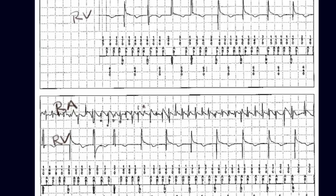In this case, something that is not easy to see — you see these two letters here that correspond to this signal, same thing with this one over here and this one over here. It says there's a B and a V. Anyone have any idea what that means?